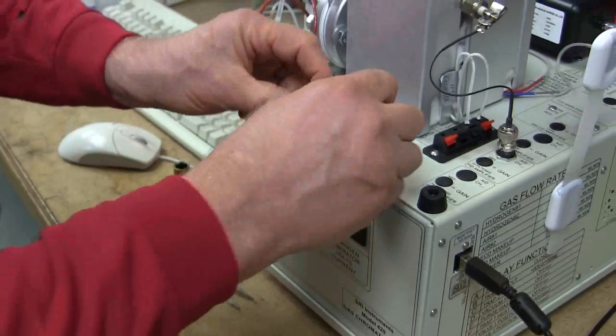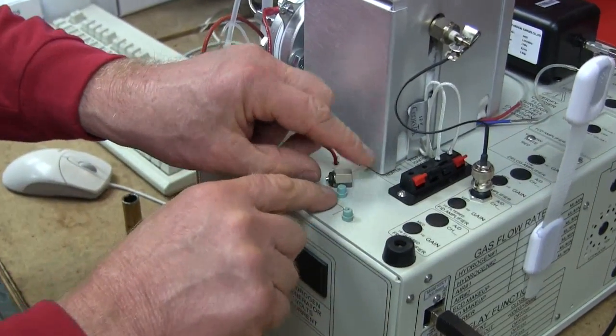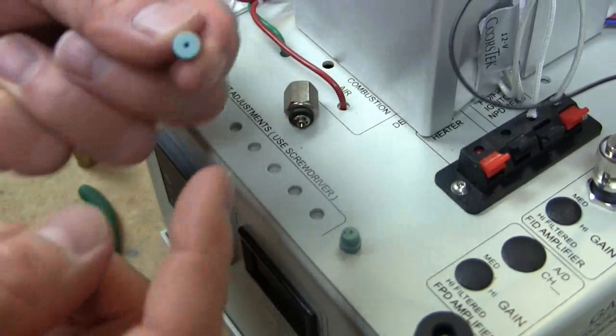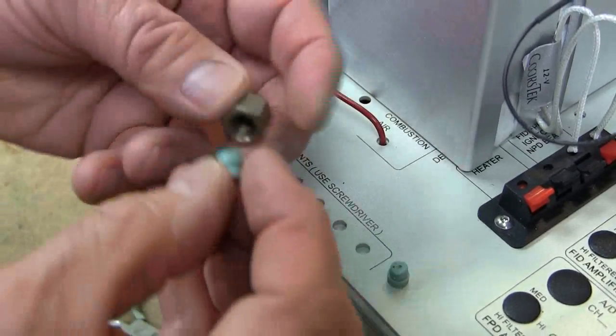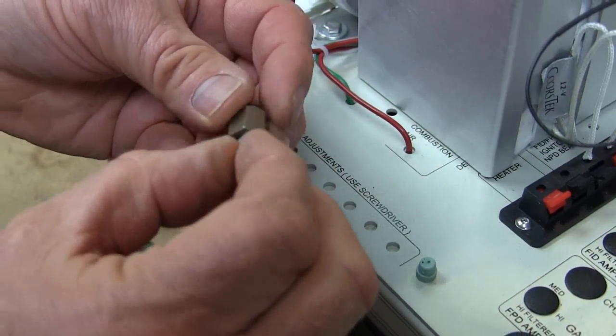And then you put the new septum in. Now notice that the septum has kind of a narrow side and it has a fat side. So the fat side goes into the nut like this.